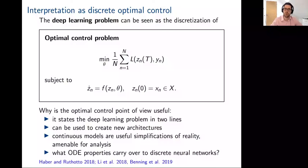What's the benefit of making this connection between discrete deep learning and a continuous version? First of all, it's very concise—we can phrase the deep learning problem very neatly in two lines. Second, the continuous formulation can be used to create new deep learning architectures by discretizing the continuous problem in different ways. Third, continuous models are often useful simplifications of reality and are amenable to mathematical analysis, so we can actually study and understand the continuous problem and thereby derive new insights for the discrete problem. Of course, special attention needs to be given to what ODE or control properties actually carry over to the discretized system.